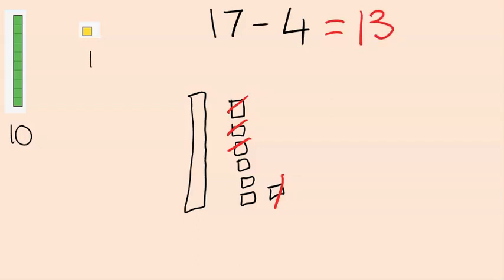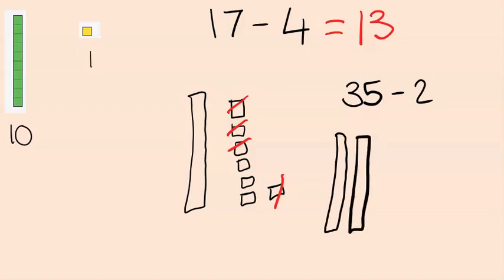And obviously, this can also be used for bigger numbers. For example, if you were to do 35 take away 2, we would have 3 of our 10s for the 30, and 5 ones, and again.